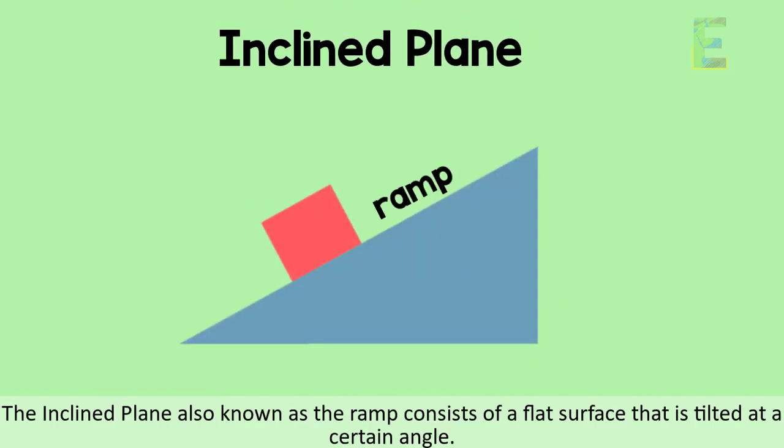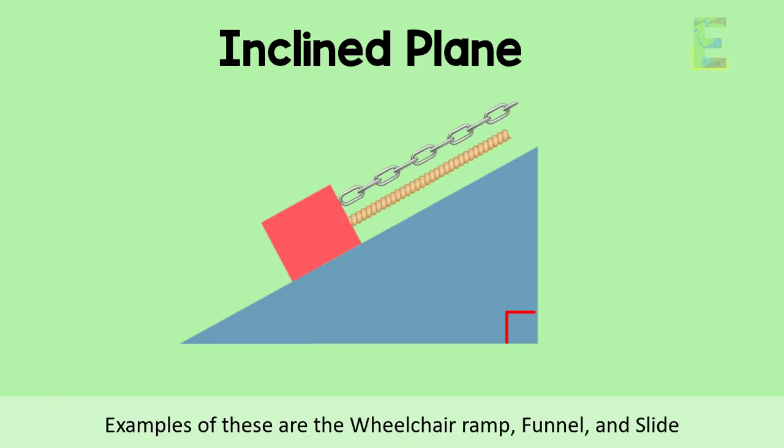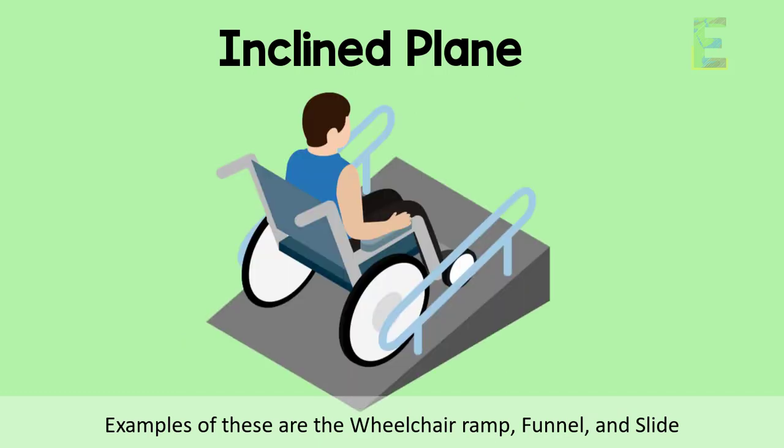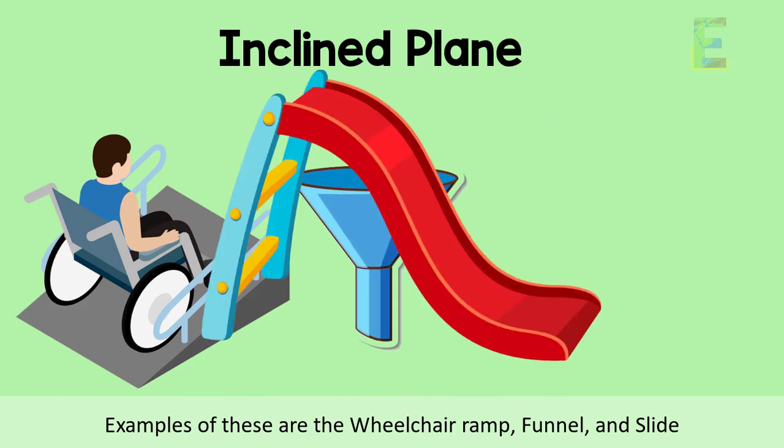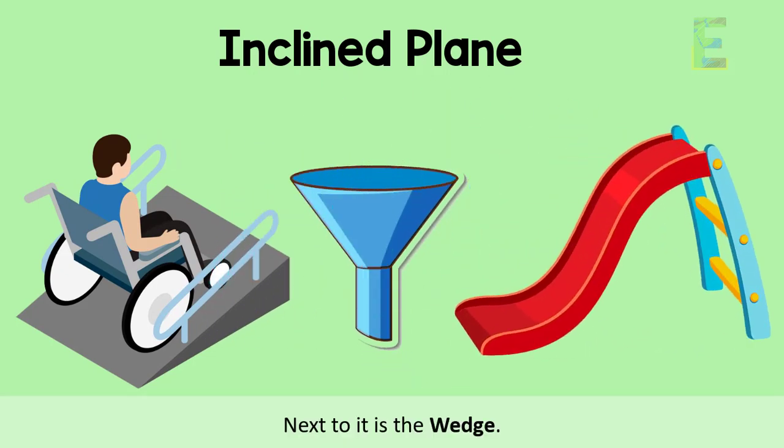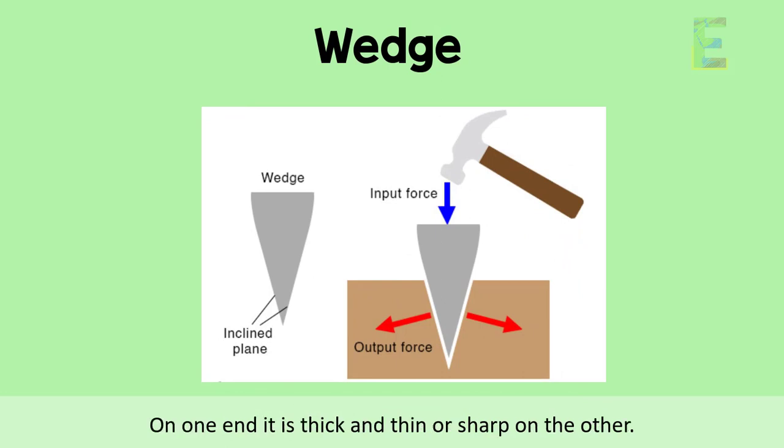The third is the inclined plane. The inclined plane, also known as the ramp, consists of a flat surface that is tilted at a certain angle. This machine is used for moving heavy objects through a sloping surface, usually with a rope or chain. Examples of this are the wheelchair ramp, funnel, and slide.